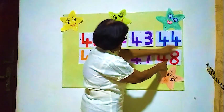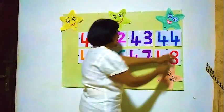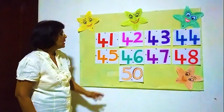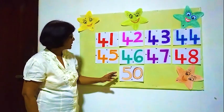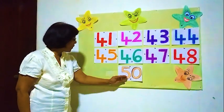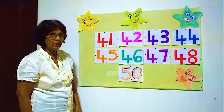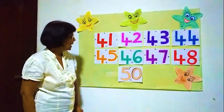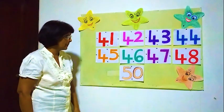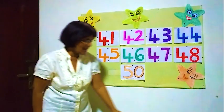48 — 4 and 8. What is the last number? The last number is there — 50. Before 50, what is the number? After 48? I have only one number there.